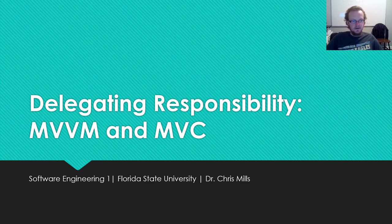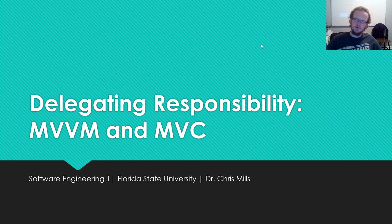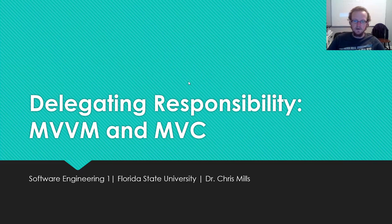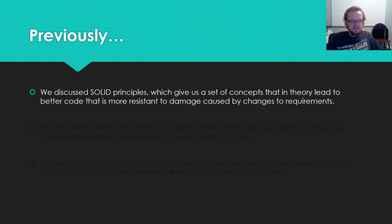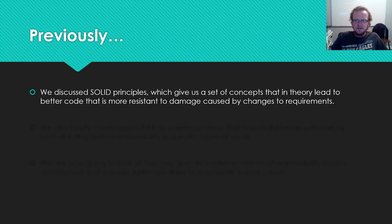Welcome back to Software Engineering One. This is the last video in the software architecture module. We're going to talk about very common coding patterns: MVVM and MVC, and how they relate to the idea of delegating responsibility, which we introduced previously. Last time we discussed the SOLID principles, which exist to build software that is as agile as the process you use to build it — so if a requirement or piece of code changes, the system is much more resistant to damage.